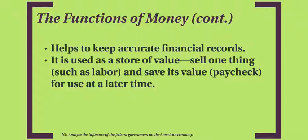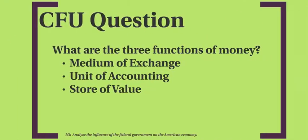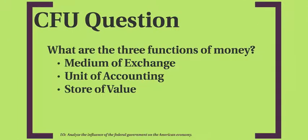Money also helps to keep accurate financial records, and it is used as a store of value. For example, you can sell one thing, such as labor, and save its value — a paycheck — for use at a later time. So, once again, what are the three functions of money? It is a medium of exchange, a unit of accounting, and a store of value.